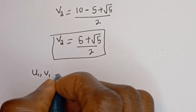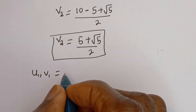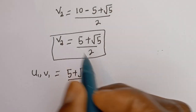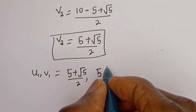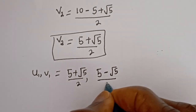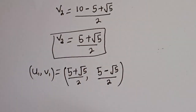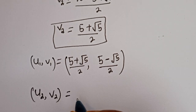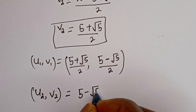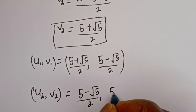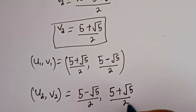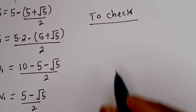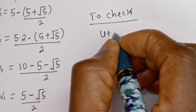Therefore our final answers are: (u1, v1) is equal to ((5 plus root 5)/2, (5 minus root 5)/2), and (u2, v2) is equal to ((5 minus root 5)/2, (5 plus root 5)/2). We can check to confirm if this answer is right or wrong.